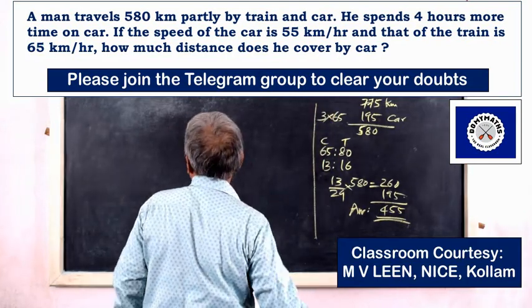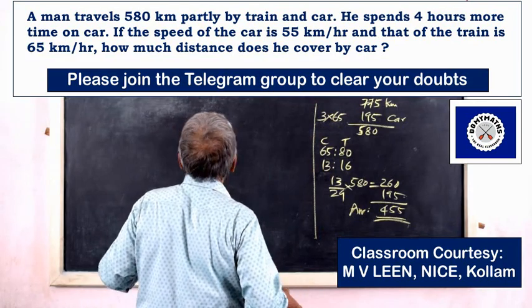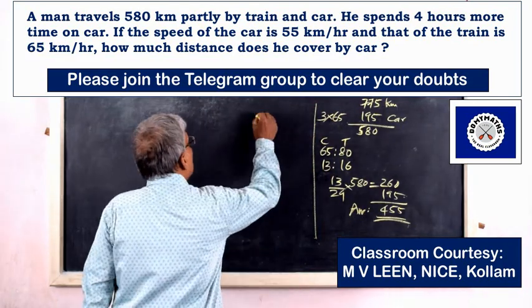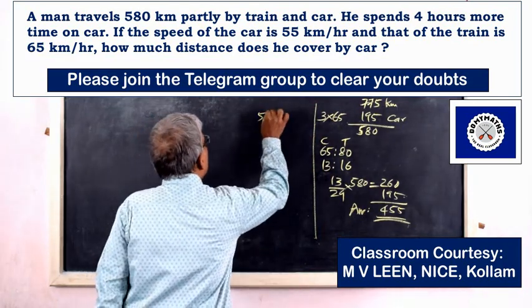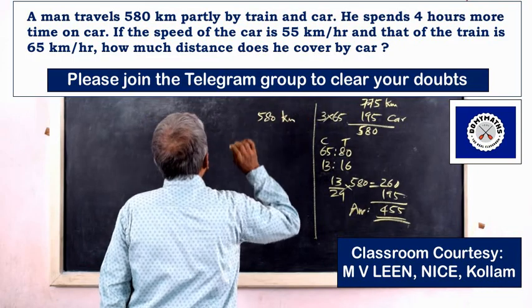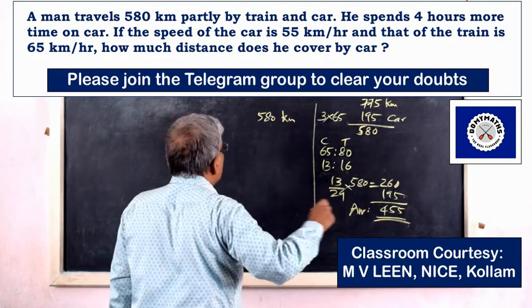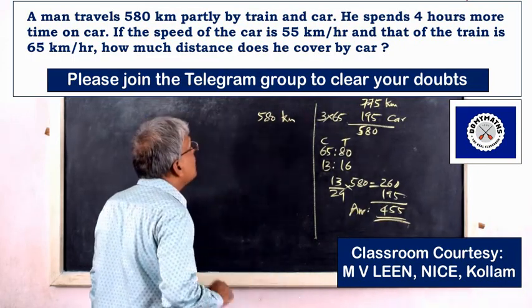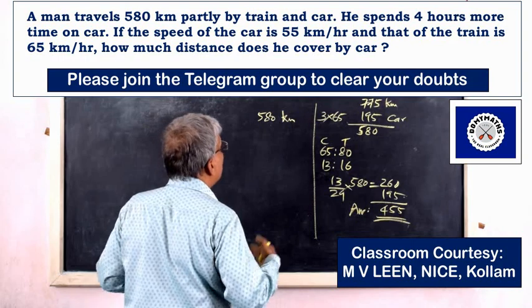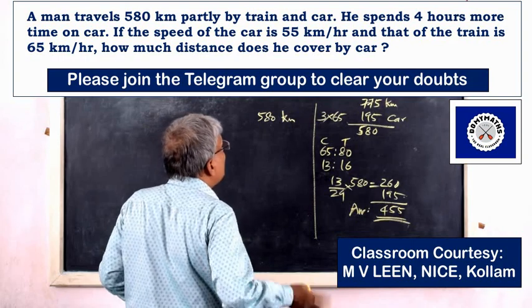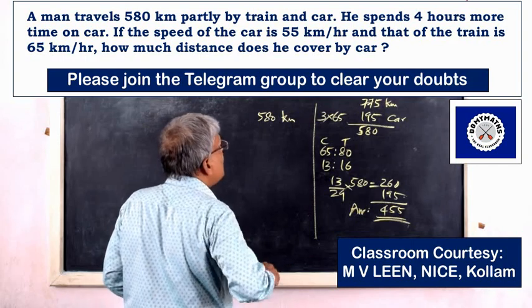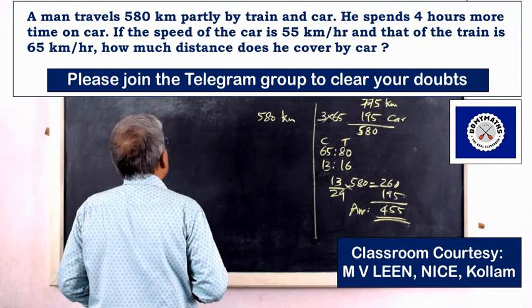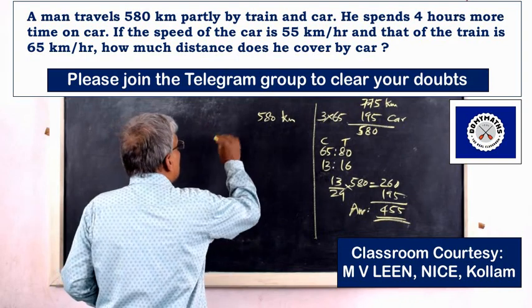A man travels 580 km, partly by train and car. He spends 4 hours more time on the car.